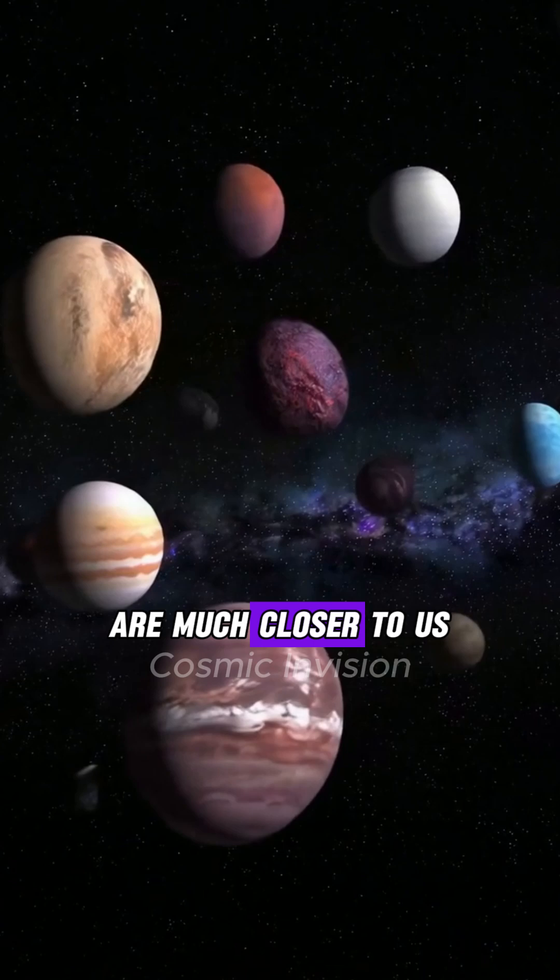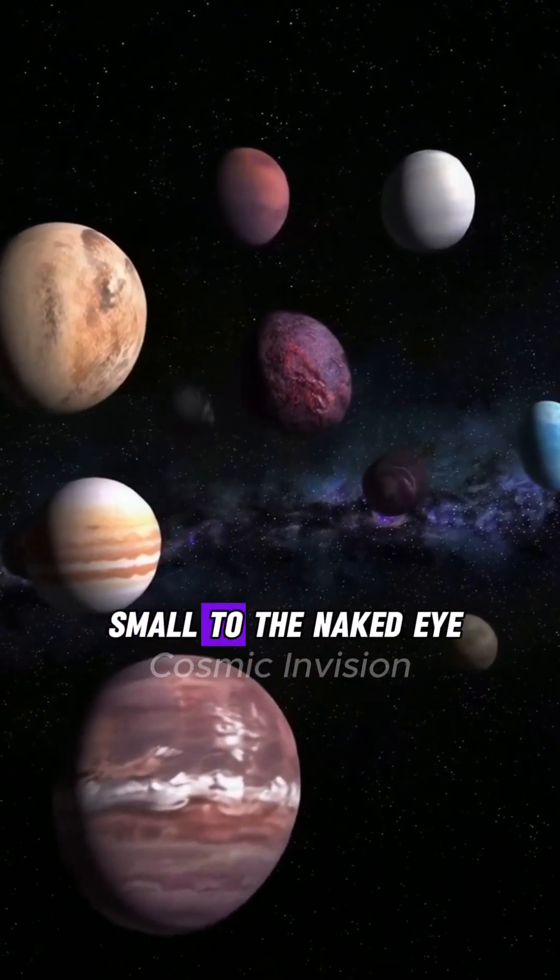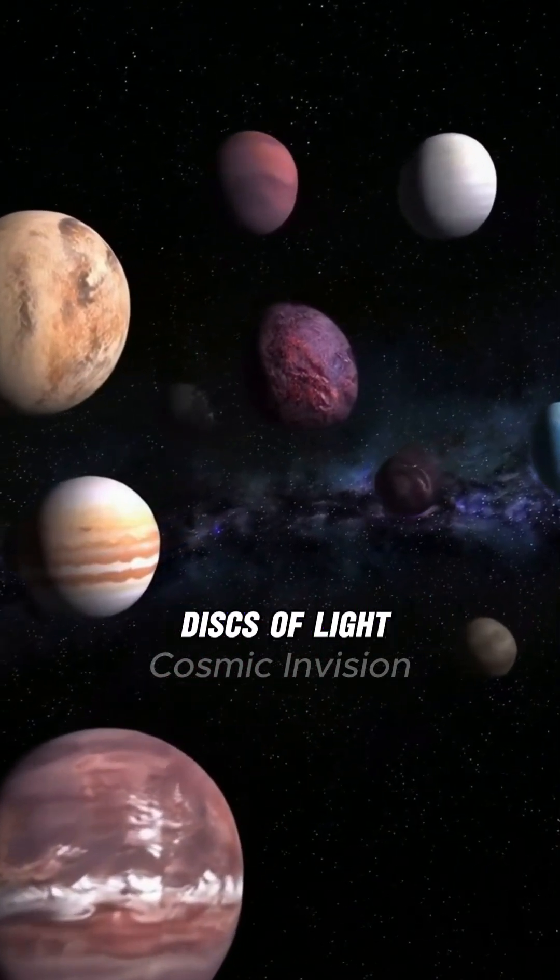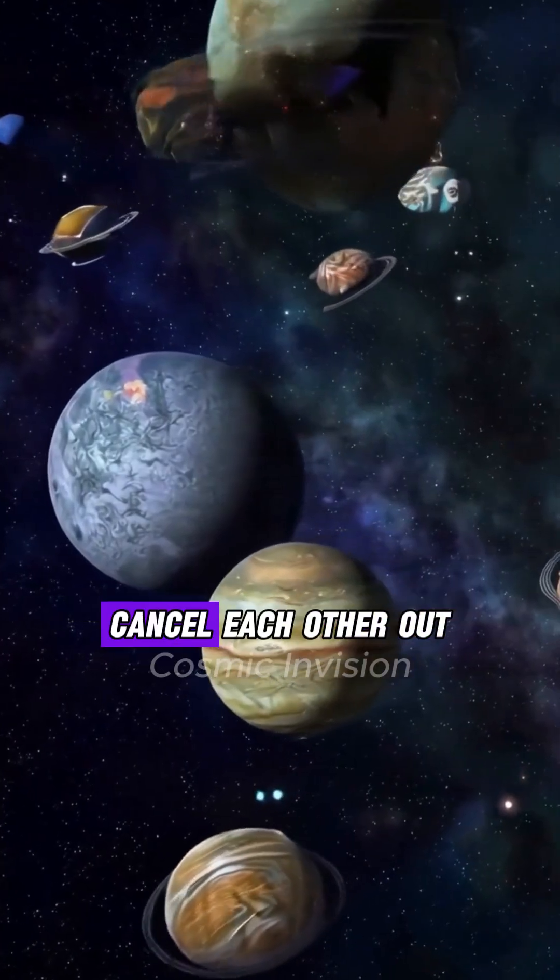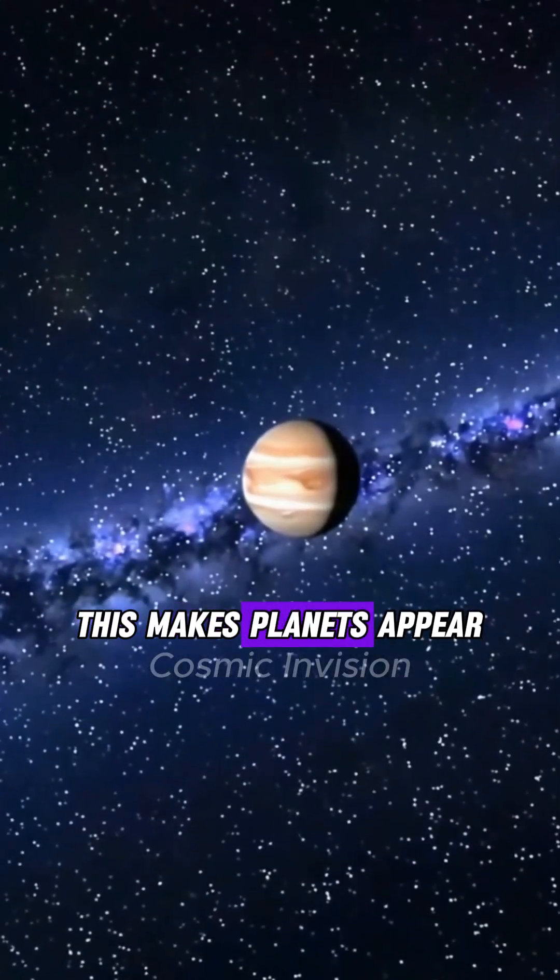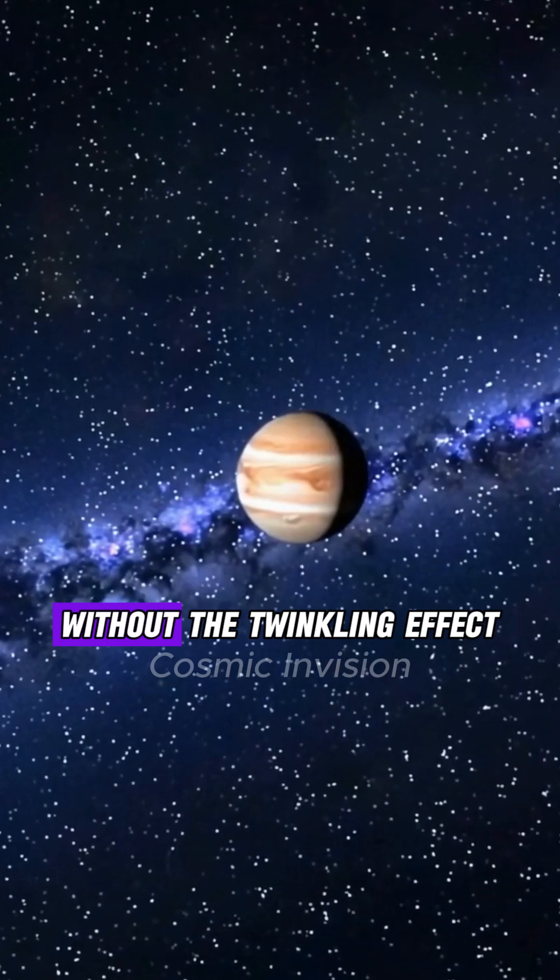Planets, on the other hand, are much closer to us. Even though they look small to the naked eye, they appear as tiny disks of light rather than pinpoints. Because their light is spread over a slightly larger area, the effects of atmospheric turbulence cancel each other out. This makes planets appear to shine steadily without the twinkling effect.